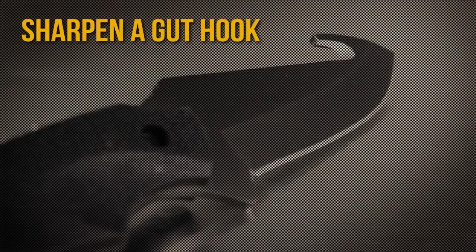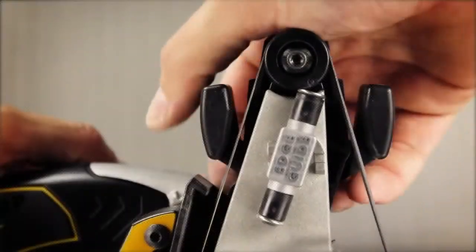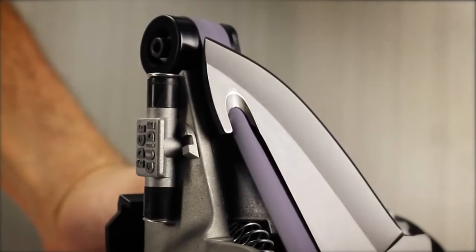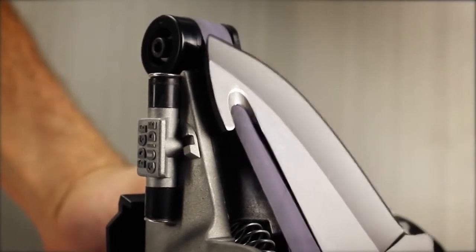Gut hooks can also be sharpened with the finest belt. Remove the sharpening guide and curl the belt into the curve of the blade. Power on for two to four seconds per side.